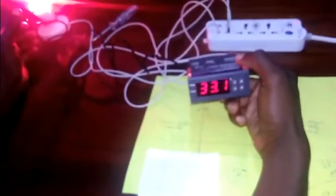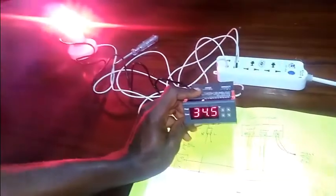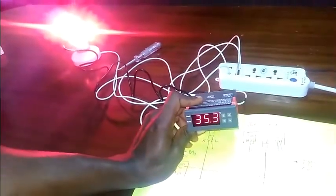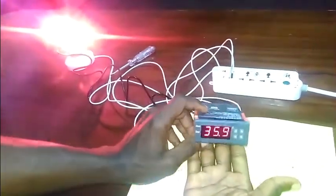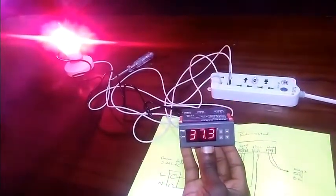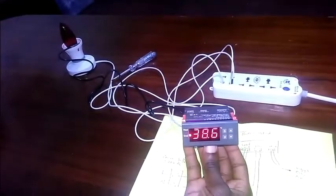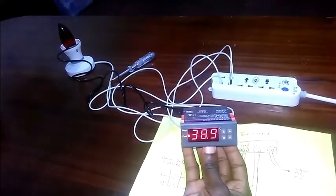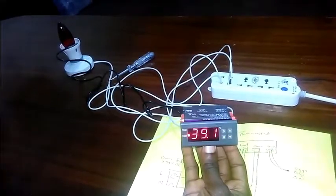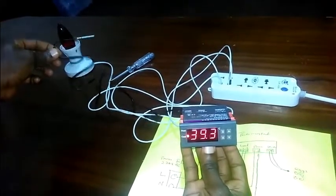We are expecting the light bulb to go off at 38 degrees Celsius. Okay, so that's it right there. The thermostat working very perfectly. So let's see if the temperature drops to 36 degrees.